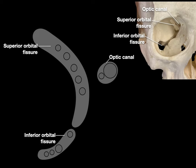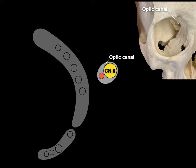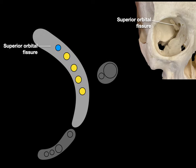In the optic canal are two structures: cranial nerve two, the optic nerve — that's what allows you to see and goes to the retina — and right alongside it, the ophthalmic artery, a branch of the internal carotid artery that supplies the orbit and retina. In the superior orbital fissure we have the superior ophthalmic vein draining to the cavernous sinus and facial vein, and cranial nerves three, four, V1 (the ophthalmic branch of the trigeminal nerve), and six. These structures are not in that exact order, but it makes it easier to remember, and since it's such a small space, it works.